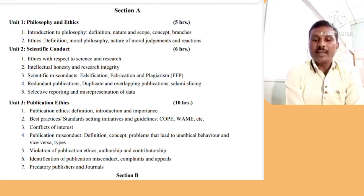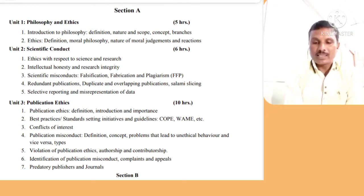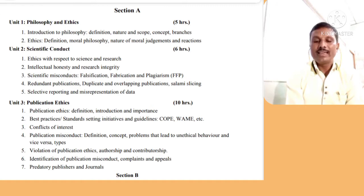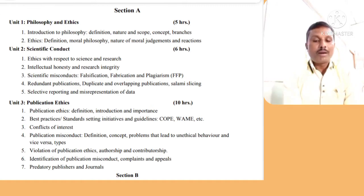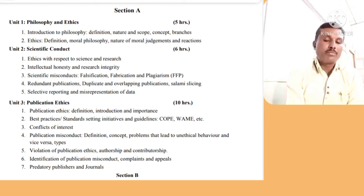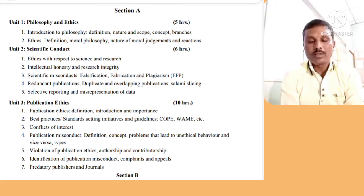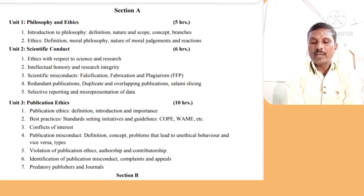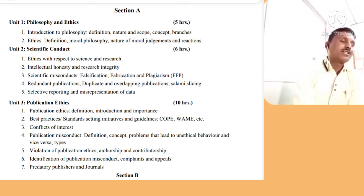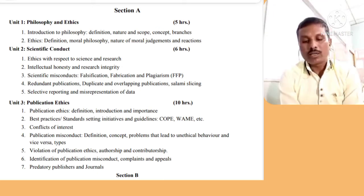In the third unit, Publication Ethics, you study its definition, introduction, and importance. There are best practices and standard-setting initiatives and guidelines such as COPE, WAME, etc., and conflicts of interest. Publication misconduct — its definition, concept, problems leading to unethical behaviour, and its types — is covered in the fourth part. The fifth part covers violation of publication ethics, authorship and contributorship, identification of publication misconduct, complaints and appeals, and predatory publishers and journals, which is quite common these days.